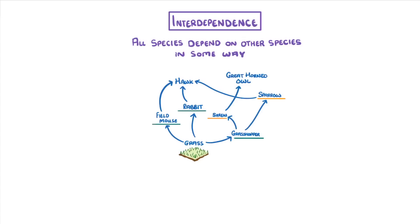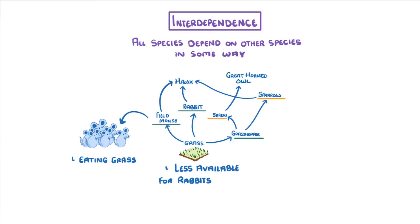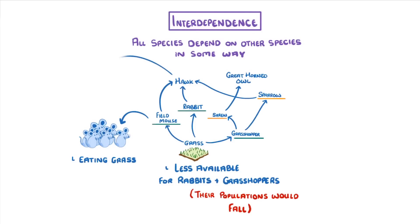For example, take a second to think about what might happen if the mouse population suddenly increased. Well, as all these mice need food, they'd start eating the grass, which would mean that there was less grass available for the rabbits and grasshoppers — so their populations would fall. Meanwhile, the hawks would suddenly have a lot more mice to eat, so their population might increase. However, as they also feed on rabbits, and there would be fewer rabbits, the hawk population might not actually increase all that much.